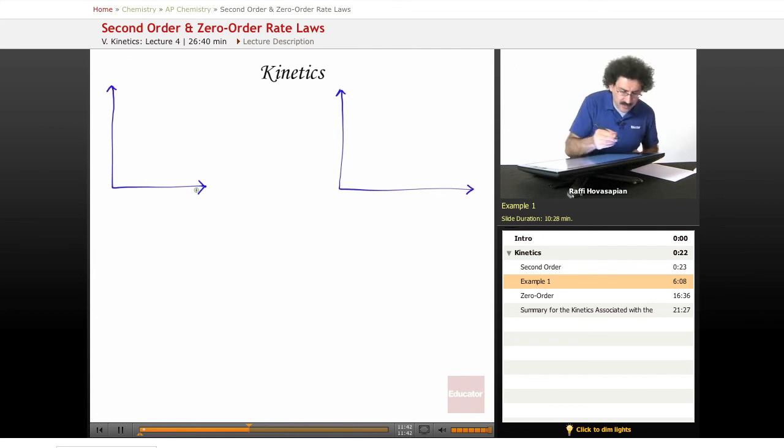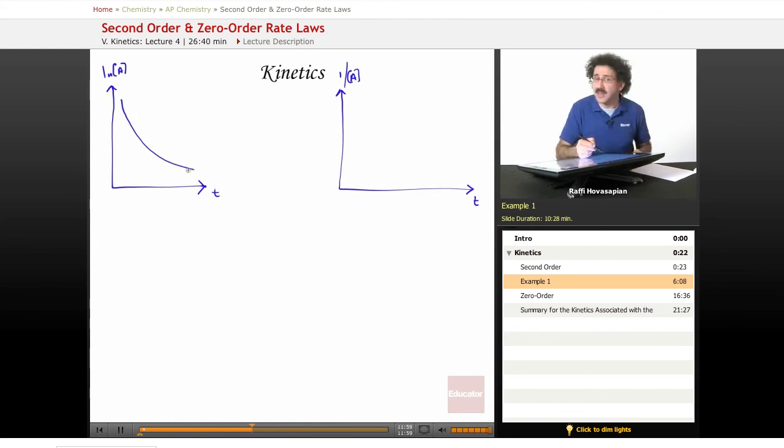Let's do the logarithm of the butadiene versus time here, and let's do the reciprocal of butadiene versus time here. When I do this, the logarithm graph gives me something like this, definitely not a straight line. When I do the reciprocal, I get a straight line. So I will have you confirm this, but this is exactly what happens. Because it's the reciprocal that gives us a straight line, it's a second-order reaction.